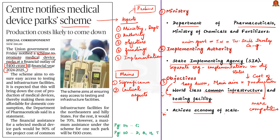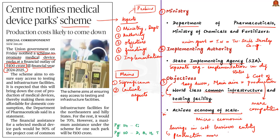The second objective is that the government aims to achieve economy of scale. Economy of scale is a microeconomic concept referring to savings in cost that a business experiences by making the production process more efficient. This can be achieved internally or externally. Through this scheme, the government aims to achieve it externally — since all industries will be located close to each other, they can share skilled labor and common infrastructure, bringing down the overall cost of production.